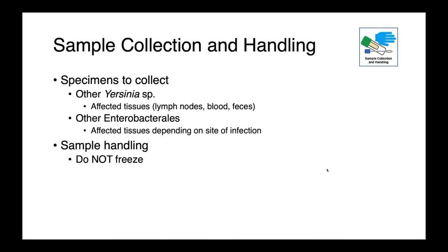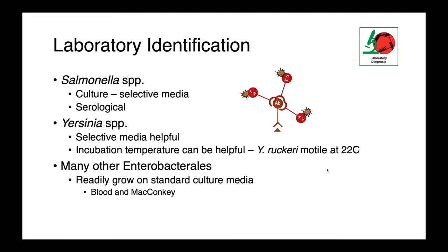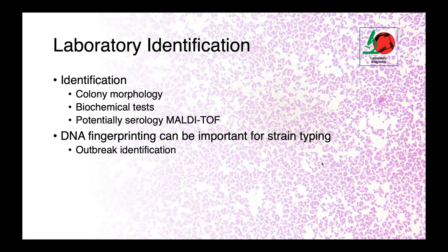In the lab, Salmonella can be identified through culture, and oftentimes selective media is employed — if this is a bug you suspect, make sure to tell the lab so they can use the appropriate media. We also have serological assays to detect exposure to this organism. We have media for the selective isolation of Yersinia, and it's important to make sure the lab knows what species you're dealing with. When dealing with infections in ectothermic animals, such as a fish farm with rainbow trout, let the lab know so they can modify incubation temperatures. In outbreak settings, it may be important to employ DNA fingerprinting techniques to determine the source of the infection.